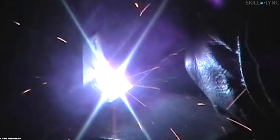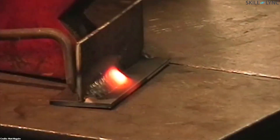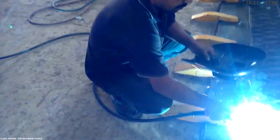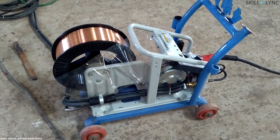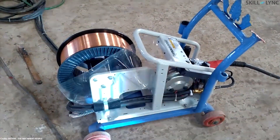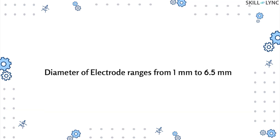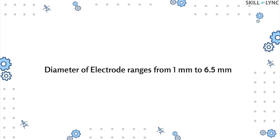Due to the high temperature of the arc, the electrode and the workpiece melt. This causes the molten electrode to drip onto the workpiece and solidify. To ensure that the arc remains constant and the electrode does not run out, the spool of wire rotates continuously so that the electrode is fed at all times.